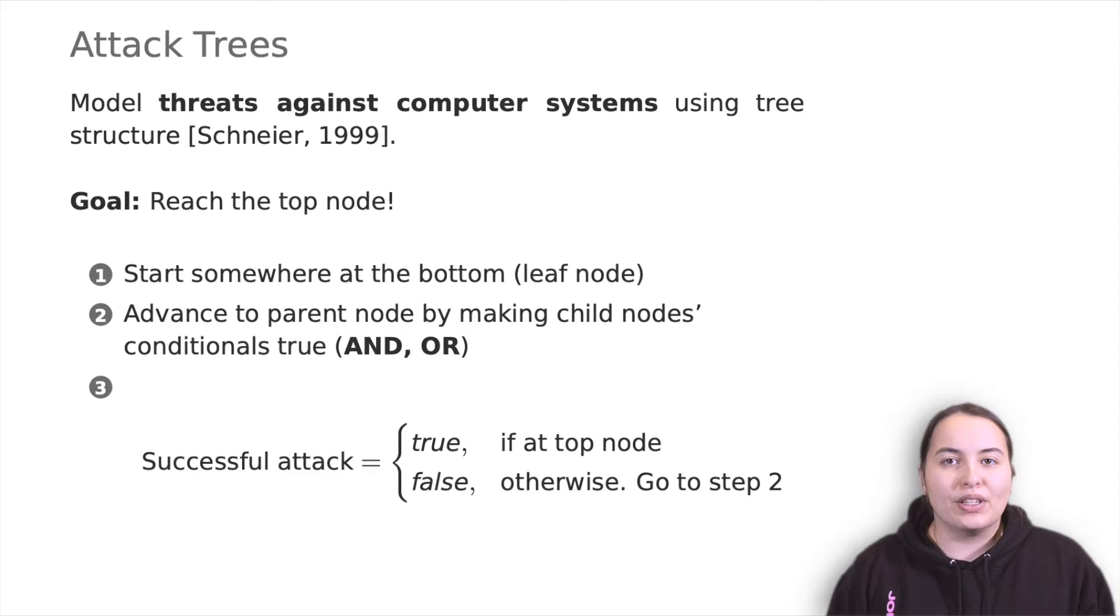OR nodes are used to represent alternatives, which is the standard connection. AND nodes are used to represent different steps towards achieving the same goal which need special highlighting. Attackers can't achieve the goal unless both sub-goals are satisfied.